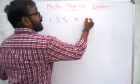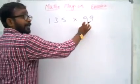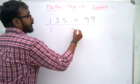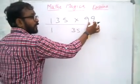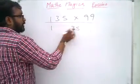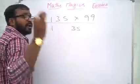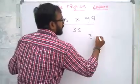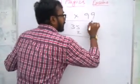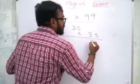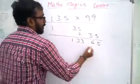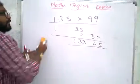If you want to find the product of 135 into 99 — for example, 99 has two digits — convert the multiplicand into two parts: one and 35, because 99 has two nines, so we consider two digits here. Write 35 again, add one to this number — it becomes two. Then 35's complement is 65, and 35 minus two is 33. Write one — this is the product.